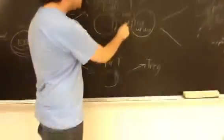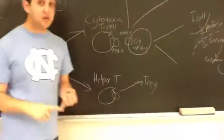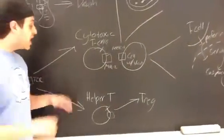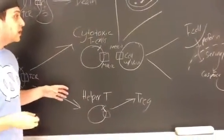Cytotoxic go to MHC class I. Helper go to class II. MHC class I is presented on all cell surfaces of all cells. MHC class II is only presented on immune cells, so B-cells.